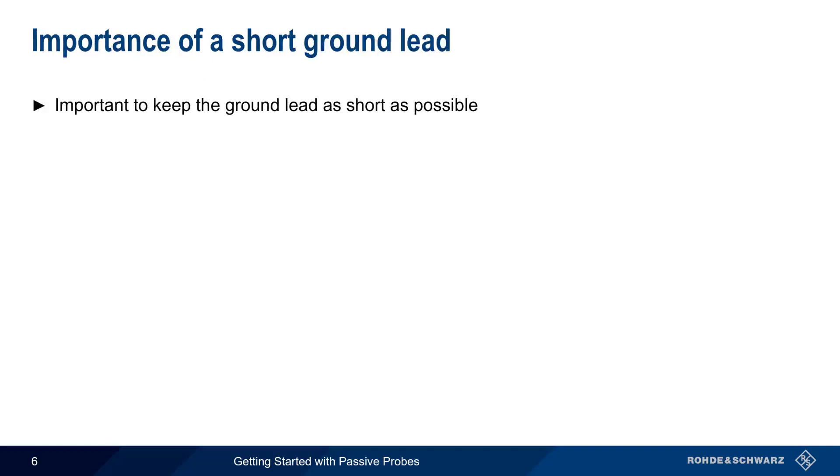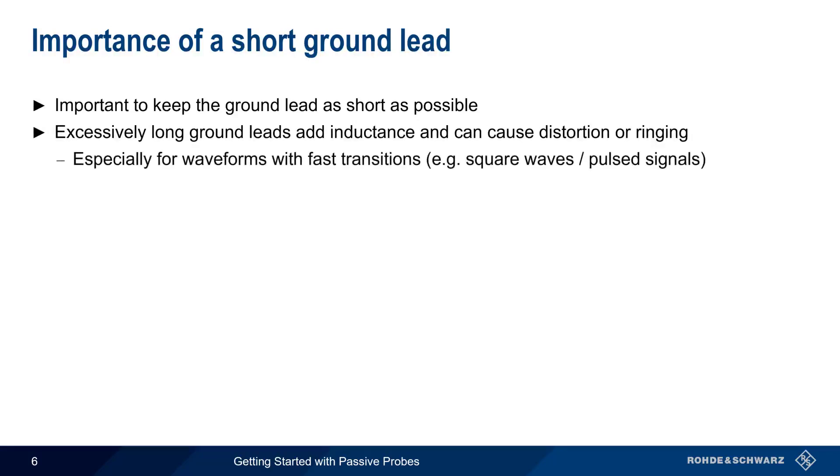It's extremely important to keep the ground lead as short as possible. Excessively long ground leads add inductance, and this in turn can cause waveform distortion or ringing, especially on waveforms with fast transition times, like square waves or pulse signals. For example, with a very short ground lead, there is little to no ringing on this pulsed waveform. Some ringing is visible when we use a typical ground lead, and a very long ground lead creates substantial ringing. Keeping the ground lead as short as possible is always a good idea when using passive probes.